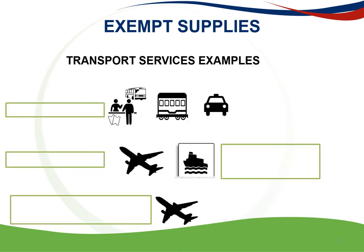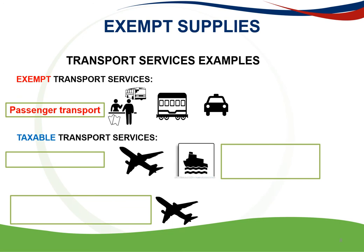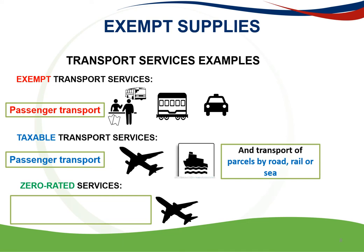There are a few rules pertaining to transport services. Exempt transport services include: travel by road or railway for fare-paying passengers within South Africa. Taxable transport services include: travel by air within South Africa, which is a standard-rated supply, as well as the transport of parcels by road, rail or sea. Zero-rated services include travel by air when a leg of the ticket is outside South Africa. Travel in a game-viewing vehicle or hearse is subject to VAT at the standard rate, and the letting of vehicles by a car rental enterprise does not constitute an exempt supply — it represents taxable supplies.